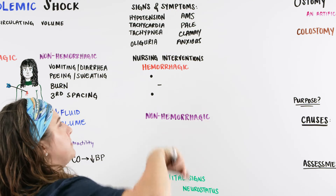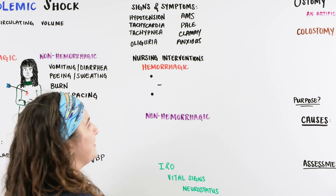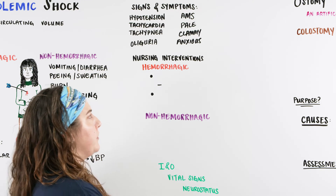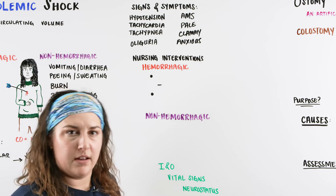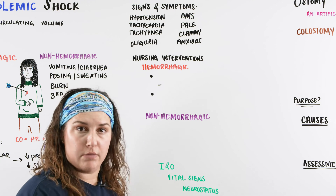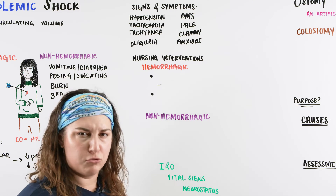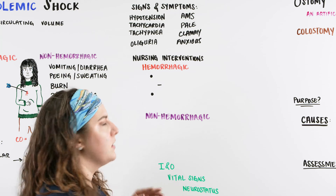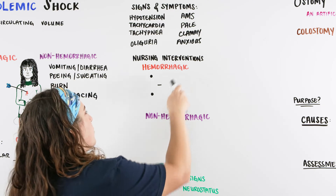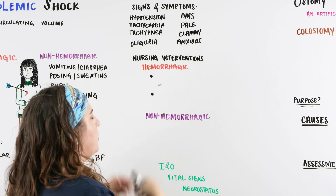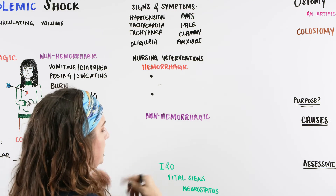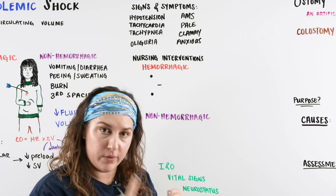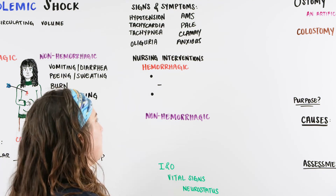So we have some general signs and symptoms — blood pressure's low, they're acting kind of funny, looking a little pale — but there may be no visible signs of bleeding. You want to think back to maybe it's something GI related: are they having difficulty with stools, or have the stools been dark? So we might get some blood work, and we might do a stool occult check and see that it's positive for blood.